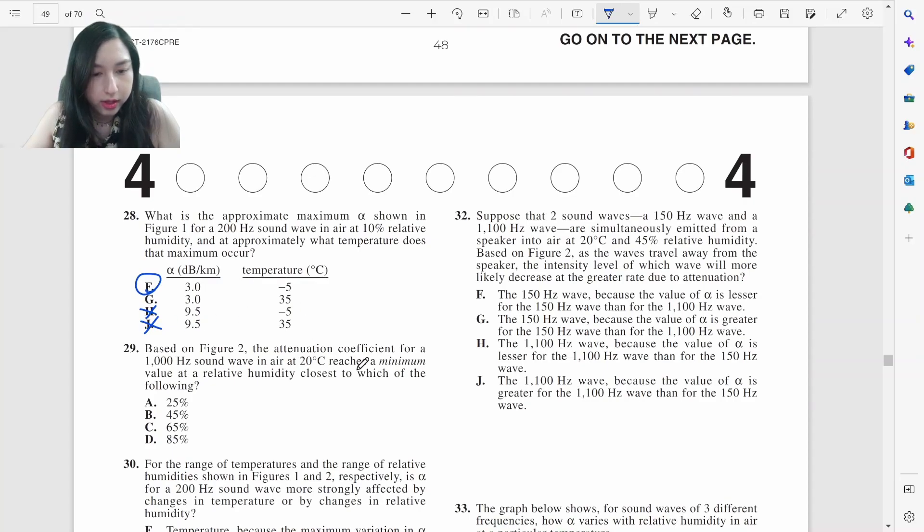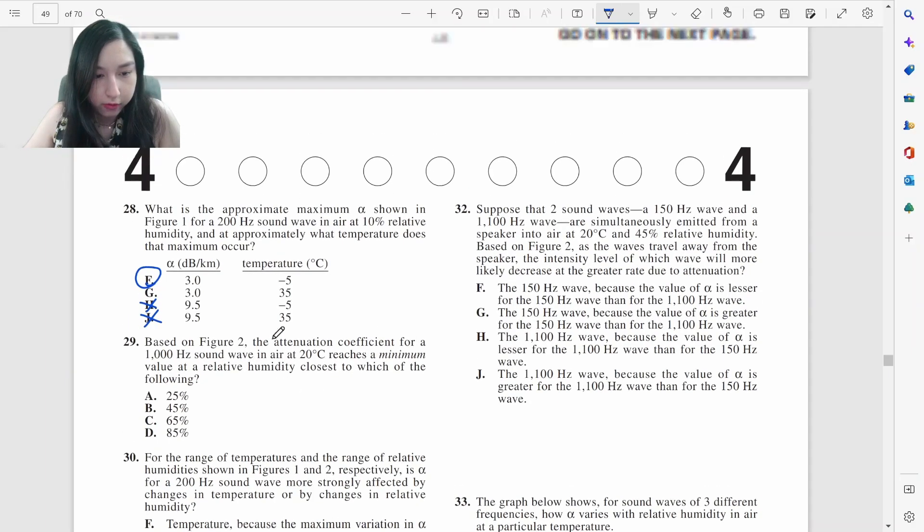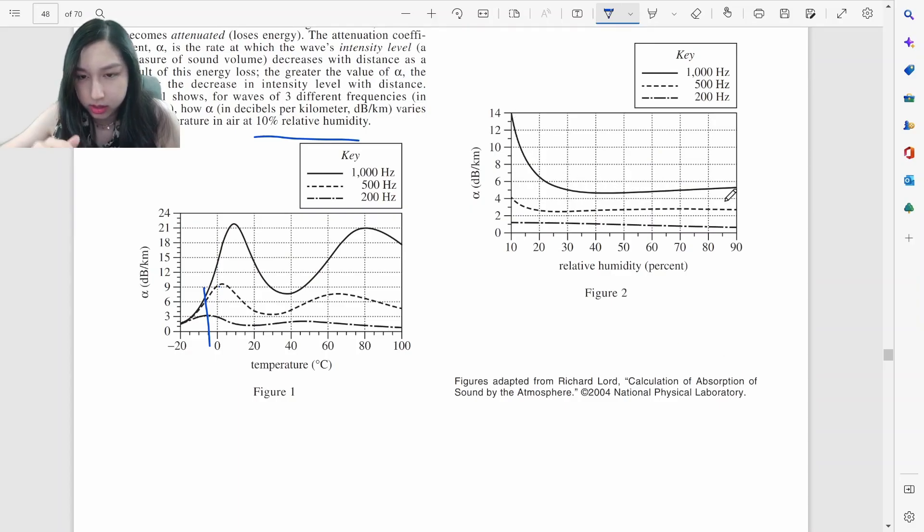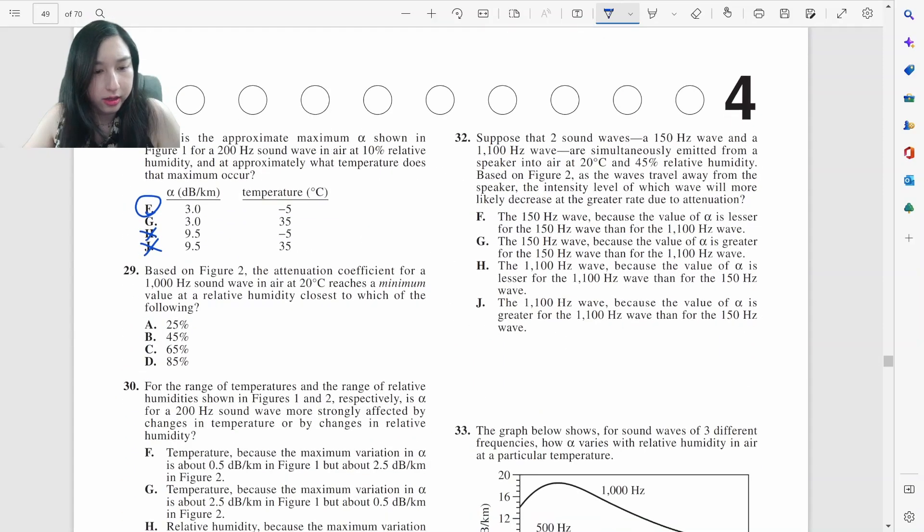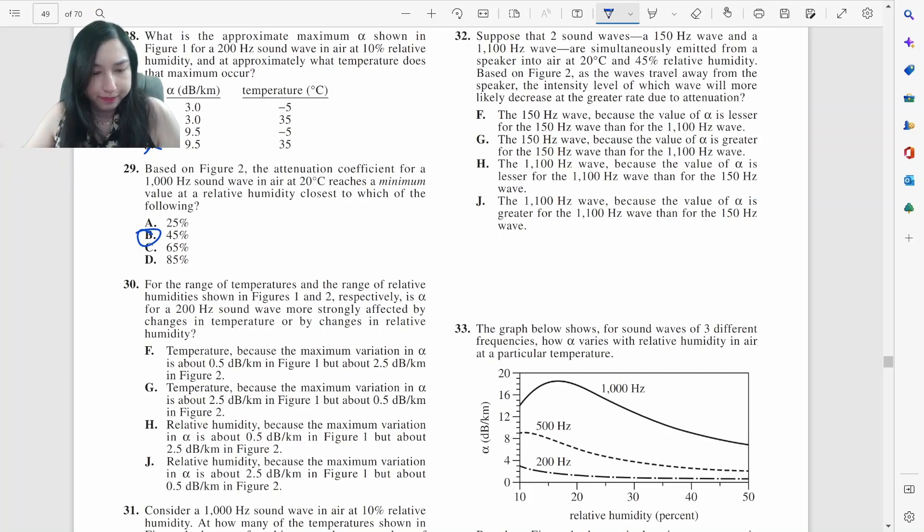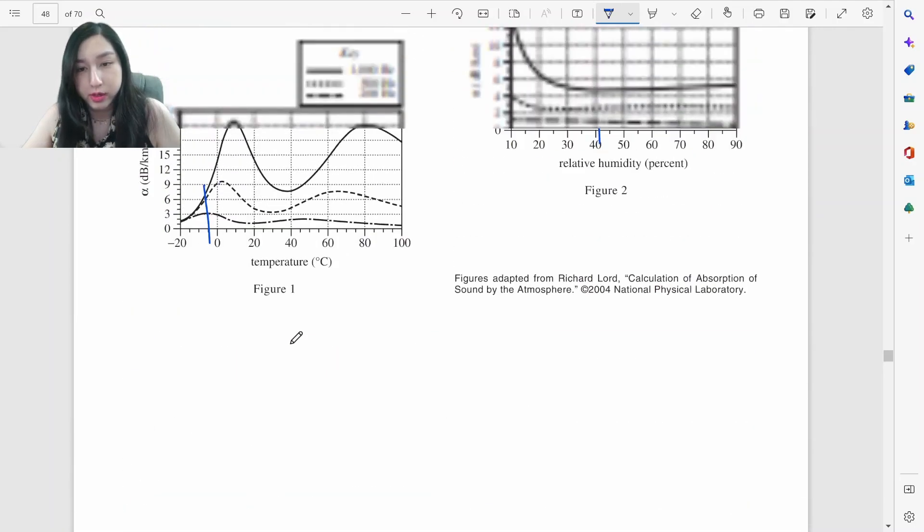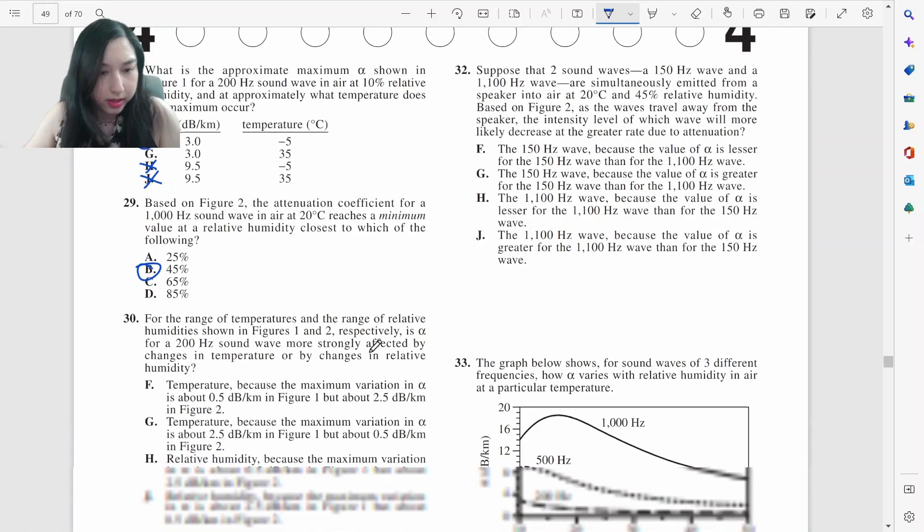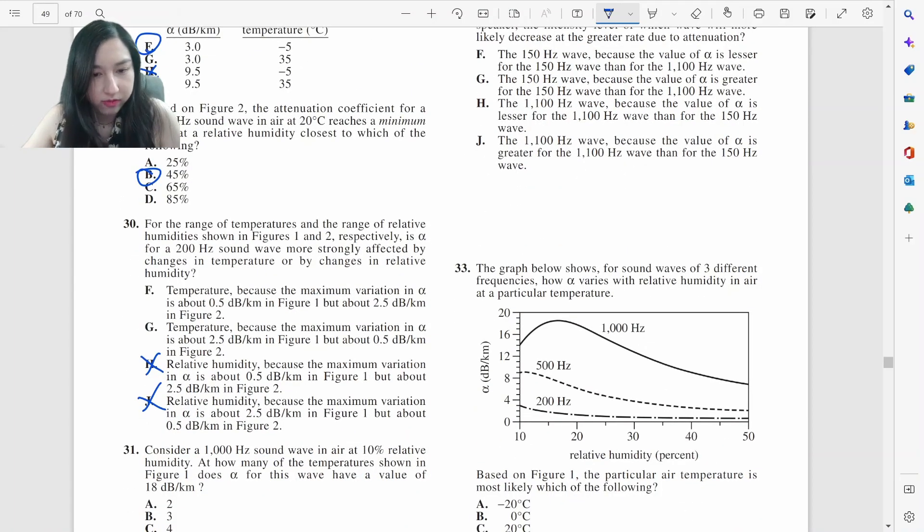Based on figure two, the attenuation coefficient for this reaches a minimum at. So figure two for 1000 hertz, this one. And we want minimum value for the solid line. It looks like it's 40, I guess. So pick the one that says it's closest to 40 B. For range of temperatures and range of humidity, is alpha for 200 hertz more strongly affected by temperature or humidity. So the bottom one is the 200 one. There is no variation for the humidity at all. So obviously it's temperature. And because the maximum variation, which is not true for F because temperature varies more. So it should be G.